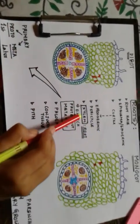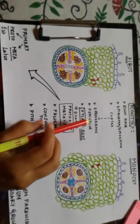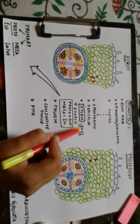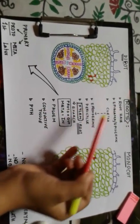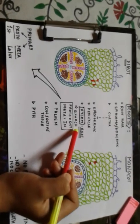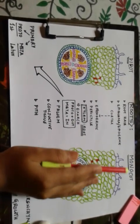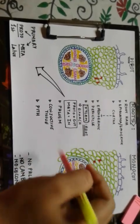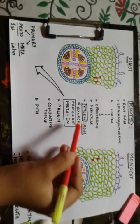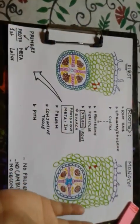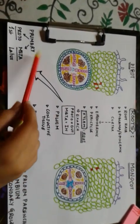Now we move to the most crucial part — the xylem. When talking about roots, the xylem is exarch. I'm hoping you know the meaning of exarch, but I'll give a fair idea so you don't get confused when comparing roots and stems, because the orientation differs between roots and stems, not just between dicot and monocot.